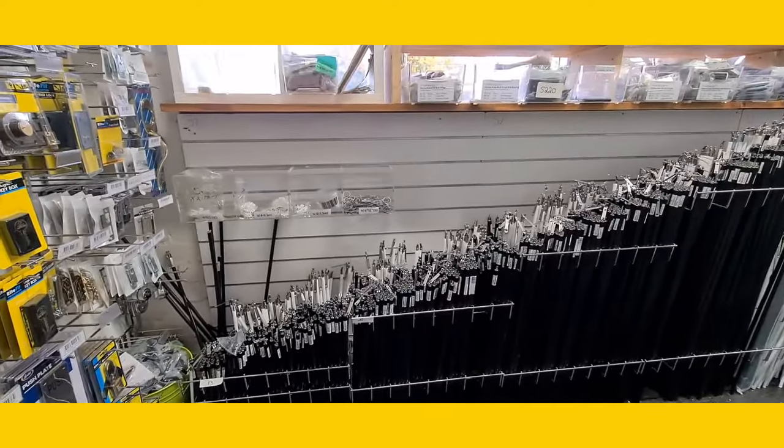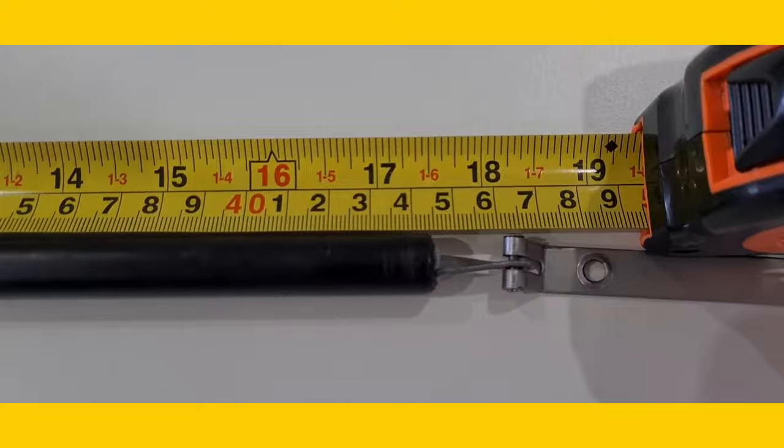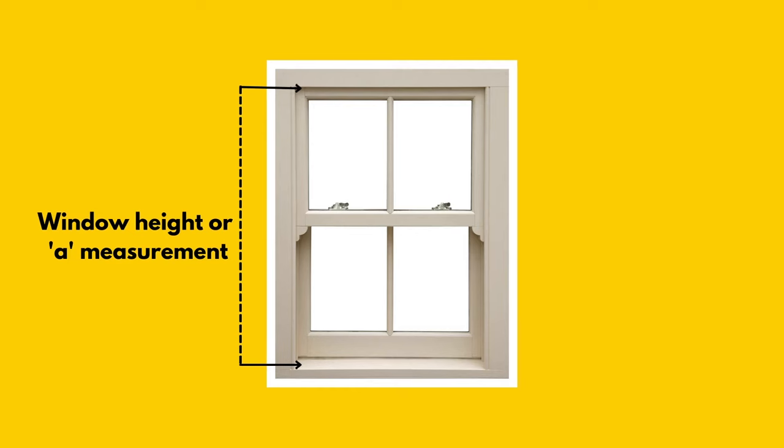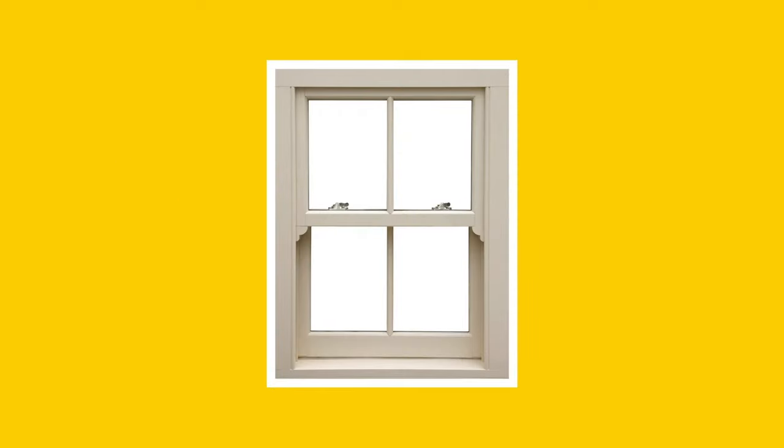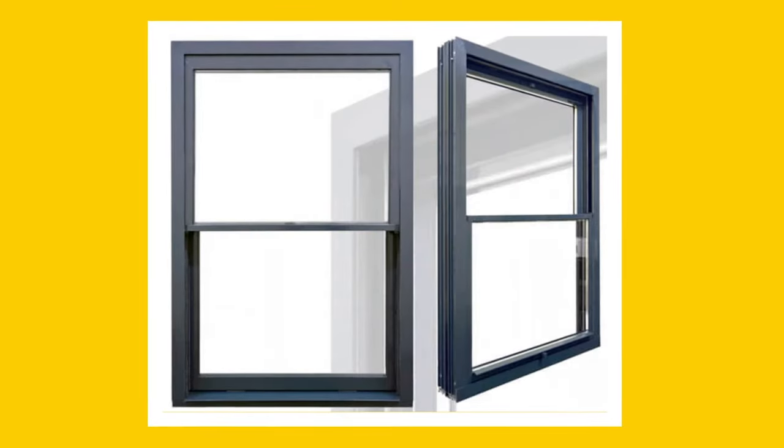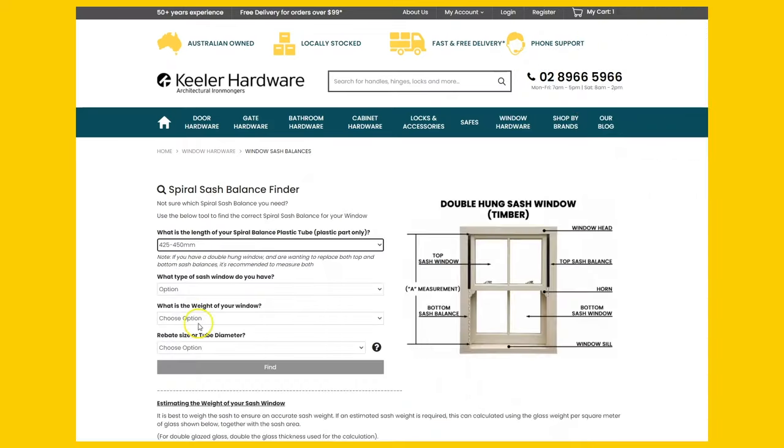Now that's done and you've provided us with either the sash balance length or the overall window height, let us know what your window is made of. Generally this will be wood or metal like aluminium. So the one we've got here is timber.